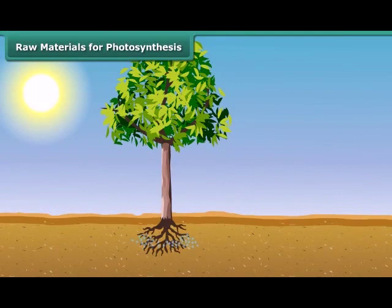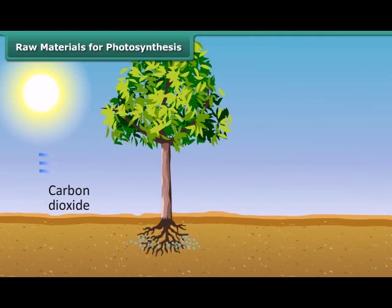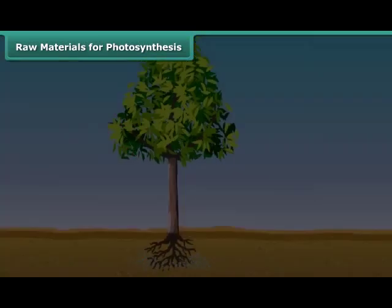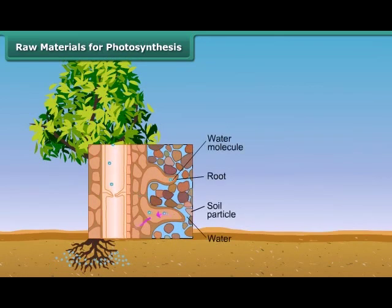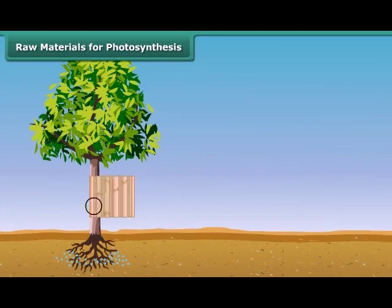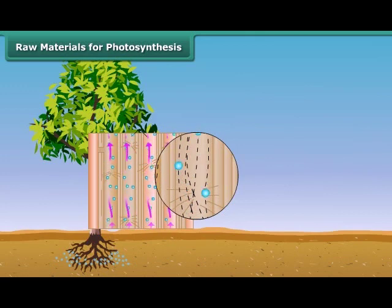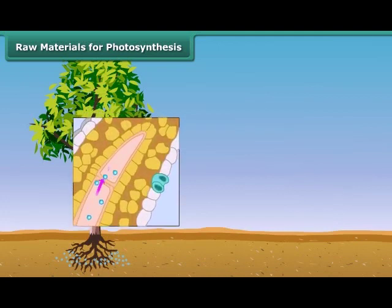Now you know that in plants, water, minerals and carbon dioxide are raw materials for the synthesis of food. But how do plants obtain these raw materials from the surroundings, and how do they transport them to the food factories of the plant? Water and dissolved minerals are absorbed directly from the soil through roots and sent to the leaves by the means of many small vessels present in the stem. These vessels run throughout the root, the stem, the branches and the leaves, forming a continuous path or passage for water and minerals to reach the leaf.